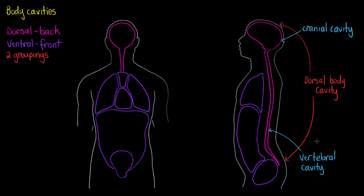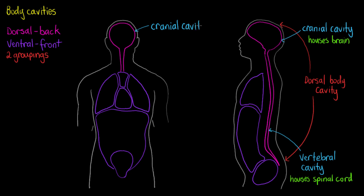So, the vertebral cavity houses the spinal cord, and the cranial cavity houses the brain. Moving over to our front view here, we can see the cranial cavity again from a different view, just to show you that before we move on to our ventral body cavities.